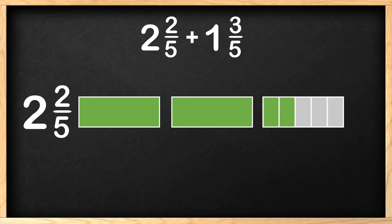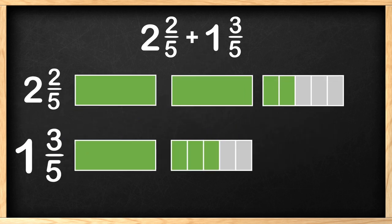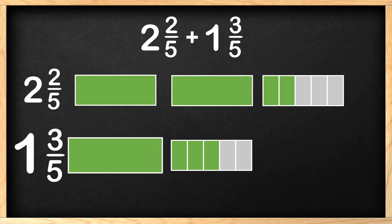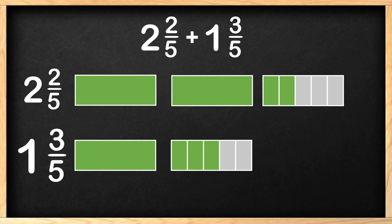Now let's look at 1 and 3 fifths. In the mixed number 1 and 3 fifths, we have 1 whole and 3 parts out of 5 equal parts. See how the shaded regions represent both mixed numbers?